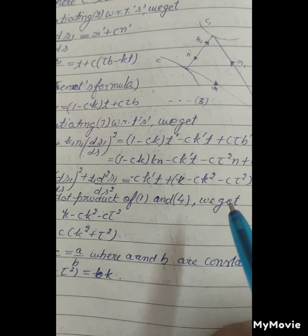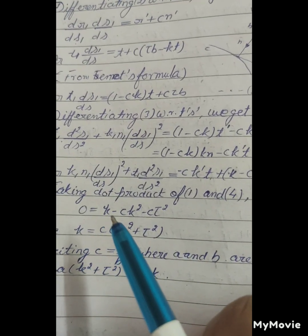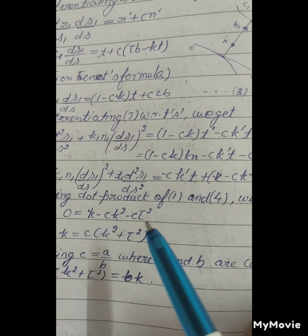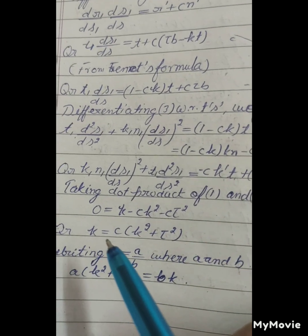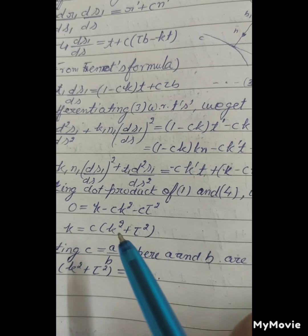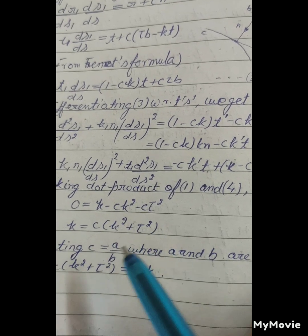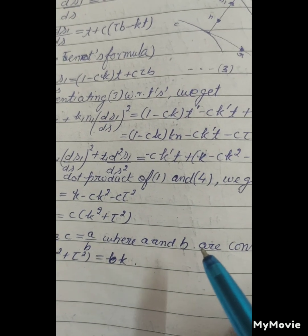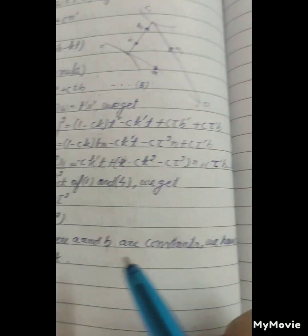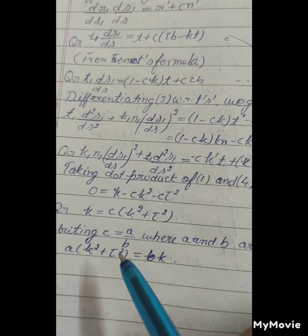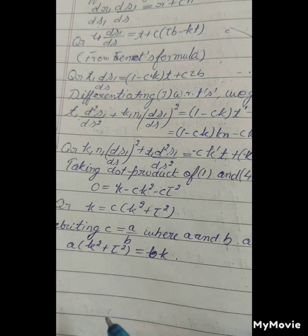Taking dot product of (1) and (4), we get 0 = k - ck² - cτ², or k = c(k² + τ²). Writing c = a/b where a and b are constants, we have a(k² + τ²) = bk.